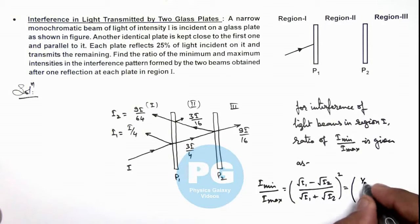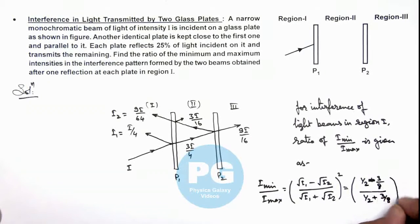This will be 1/2 minus 3/8 divided by 1/2 plus 3/8 whole square.